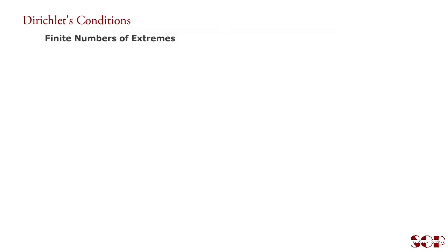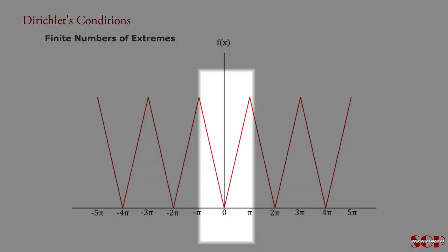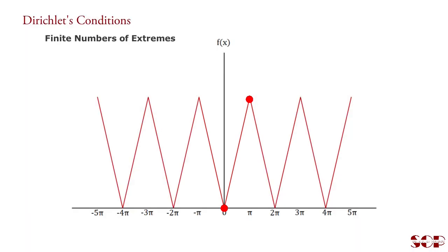Finite number of extremes. Assume a periodic function with period 2π given as shown. The figure shows that there are two extremes in a period. Consider period -π to π. At point x = 0, f(x) has a minimum value. And at point x = π, f(x) has a maximum value. It means the function has two extremes: one maxima and one minima. It means the function has a finite number of extremes.